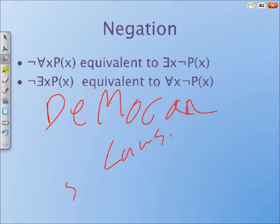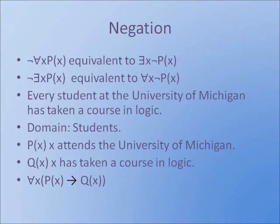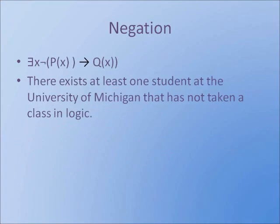An example of a negating quantified expression would be every student at the University of Michigan has taken a course in logic. The X would be that has taken a course in logic and the domain would be every student. The negation of this statement would be that it is not the case that every student at the University of Michigan has taken a class in logic. This negation makes sense because if you state that every student at the University of Michigan has taken a course in logic and you find at least even one student that hasn't, then yes, that's right. One. We only need one. There needs to exist at least one X such that someone goes to the University of Michigan yet has not taken a class in logic and that will make the negation of the for all statement that we had previously.